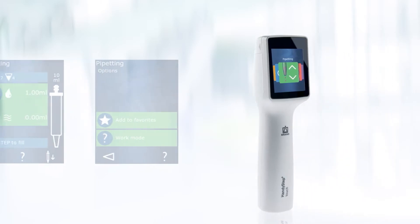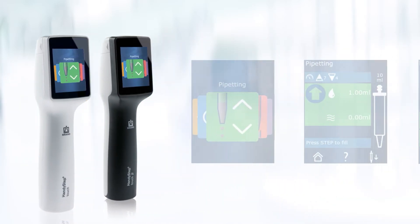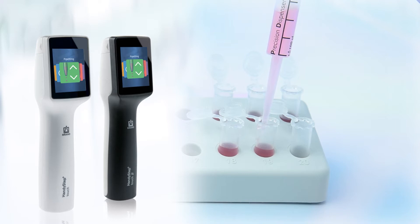The Pipetting Mode is available on both the HandyStep Touch and the HandyStep Touch S. The Pipetting Mode allows a set volume to be aspirated, then dispensed. This mode is ideal for dispensing large volumes or more viscous solutions.